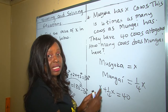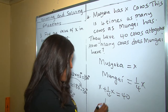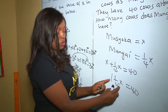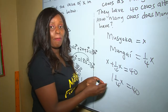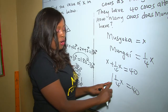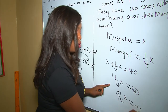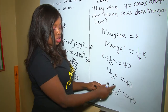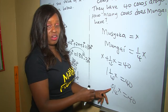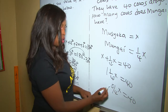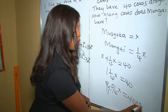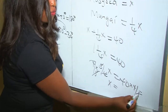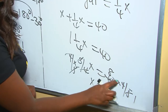Since x is 1, we have 1 + ¼ = 1¼x = 40. We change the mixed fraction to an improper fraction: 5/4 x = 40. To isolate x, we multiply both sides by the reciprocal of 5/4, which is 4/5. The 5/4 cancels to leave x, and 40 × 4/5 gives us x = 32.